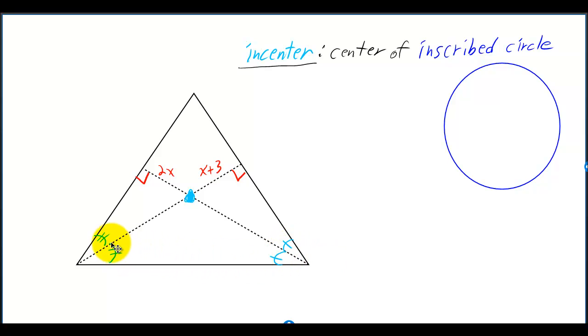We also have two angles that are being split in half, which means we have angle bisectors. The intersection of the angle bisectors is called the incenter. It's called the incenter because it's the center of the inscribed circle.